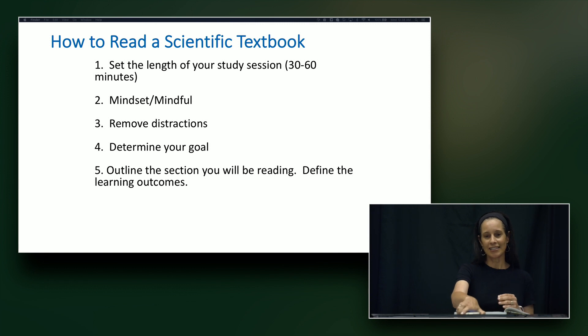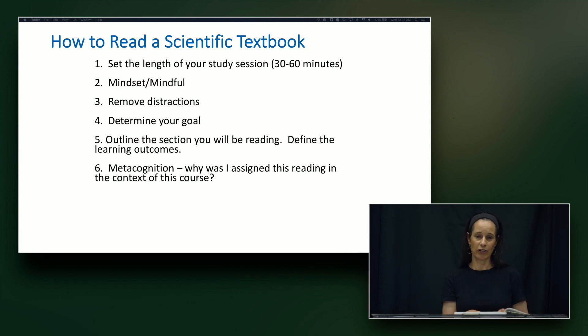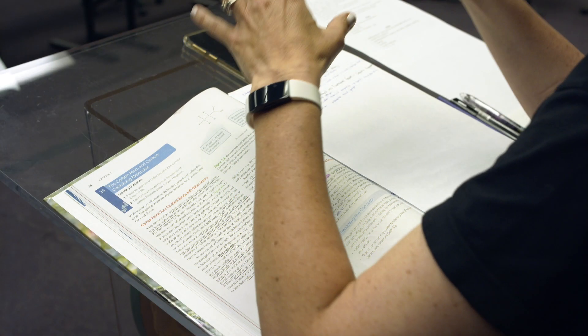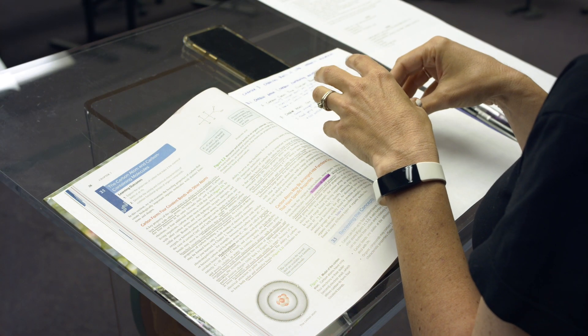All right, so then the next step is to go ahead and outline what you're about to read. So at this point I get out a clean piece of paper and I get out my pens. I like lots of pens, you can see I've got a whole host of pens, this brings me great comfort and I will go ahead and start to outline the textbook. So if I'm just doing one particular section, I'll go ahead and write out what's the title of the chapter and what are the sections that I'm about to study.